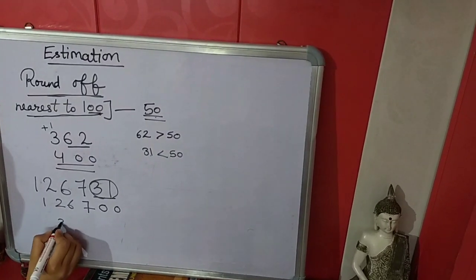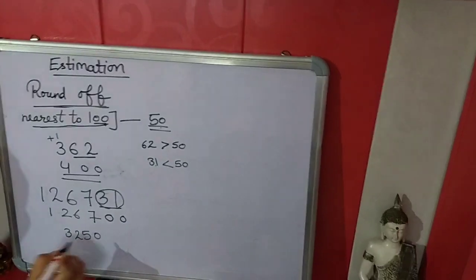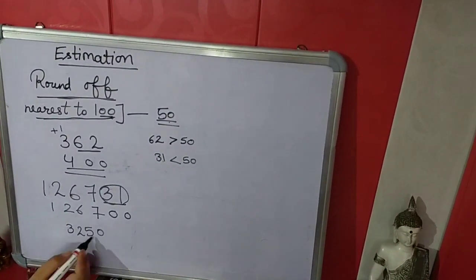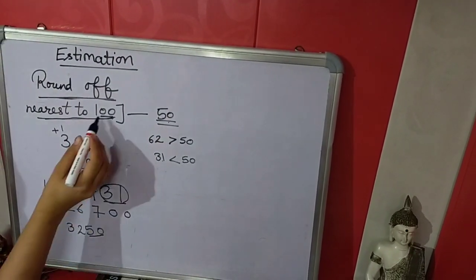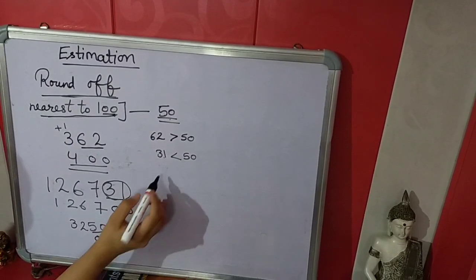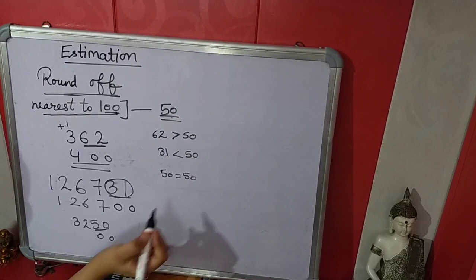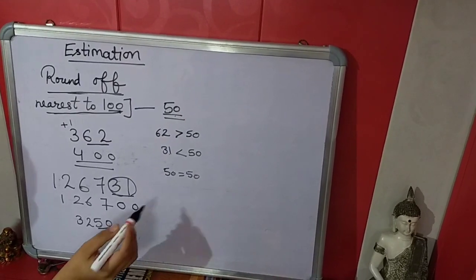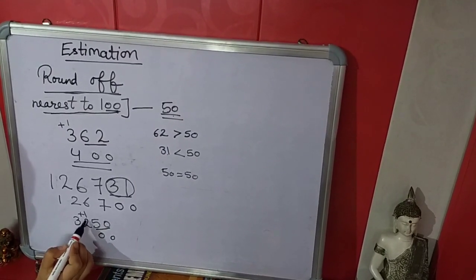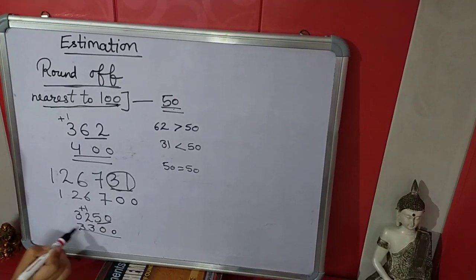Take another example. Again we will convert the last 2 numbers into 2 zeros. Now 50 is equal to 50 — both are same. So we will add 1 in the next number. The answer is 3300.